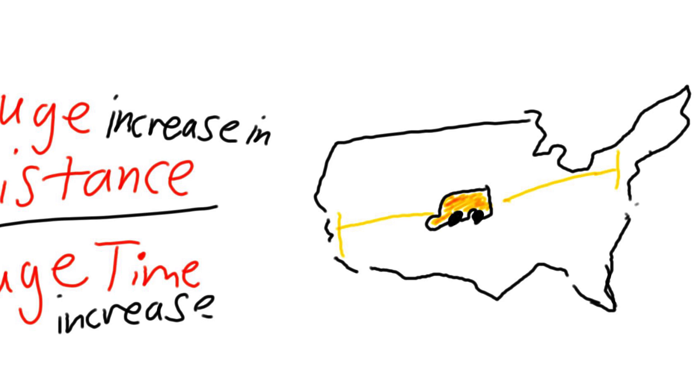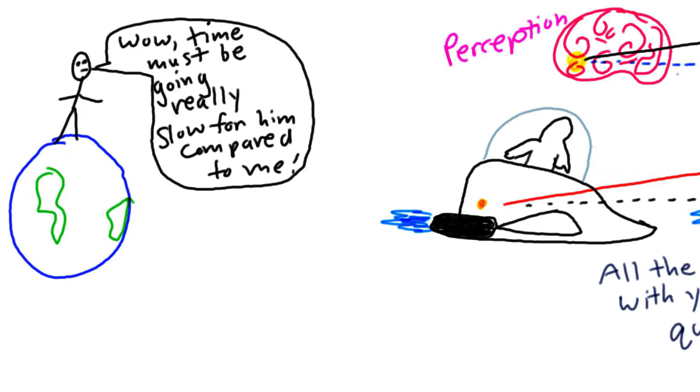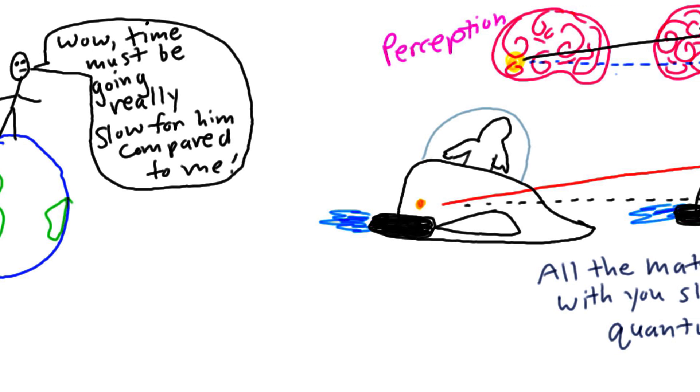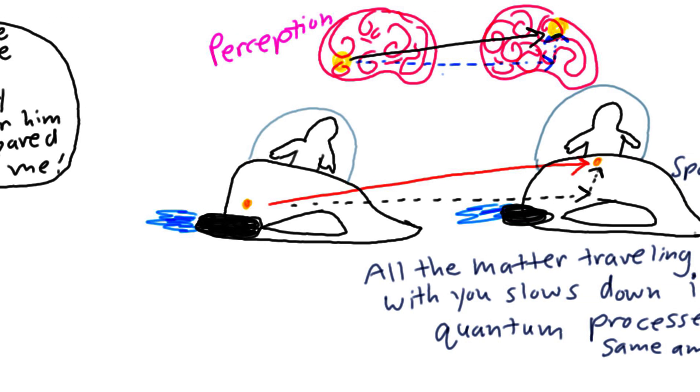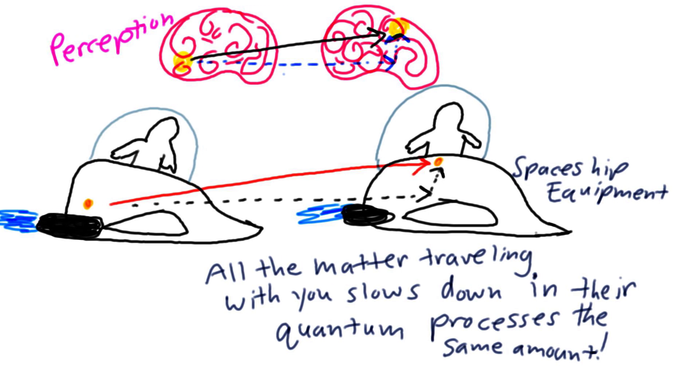Since the same bodily change that happens on Earth takes much longer to occur when you are moving so fast relative to Earth, we say that time slows down for you relative to people on Earth. But you wouldn't notice a difference, because your perception and everything traveling with you on the spaceship also rely on the behavior of light speed particles, and would have to slow down just as much as your body's aging process.